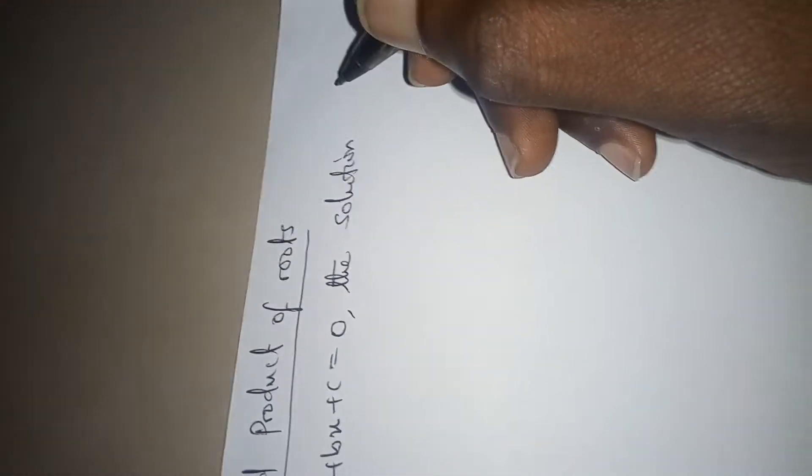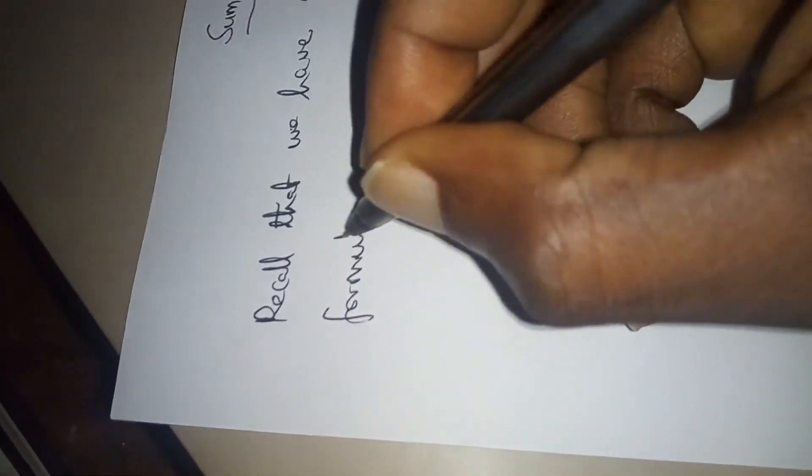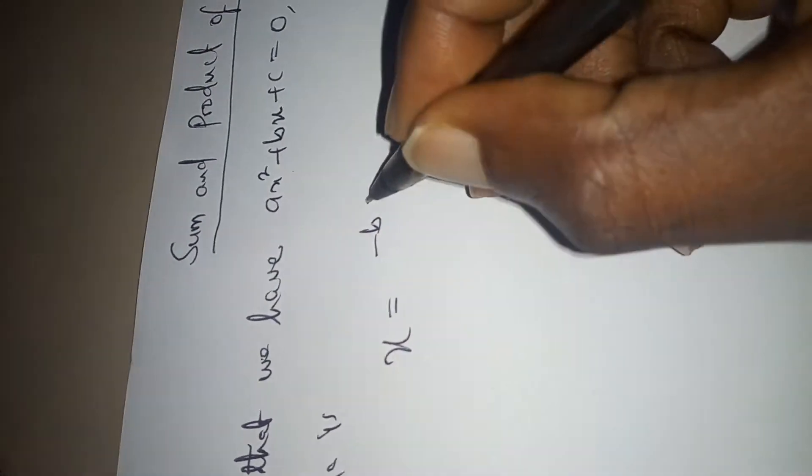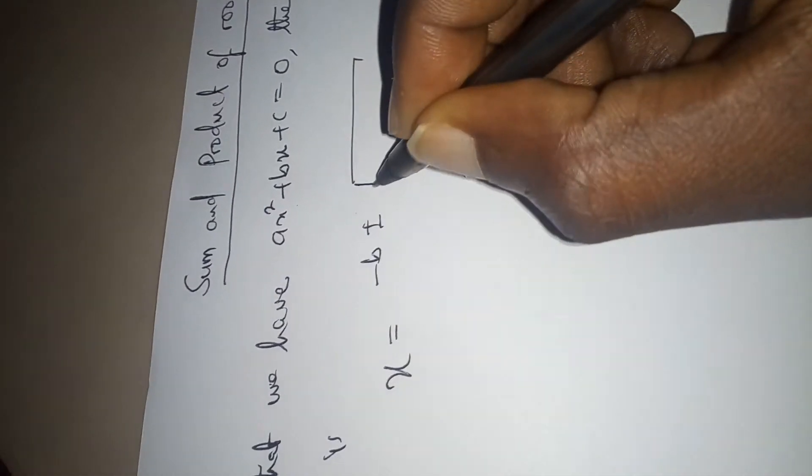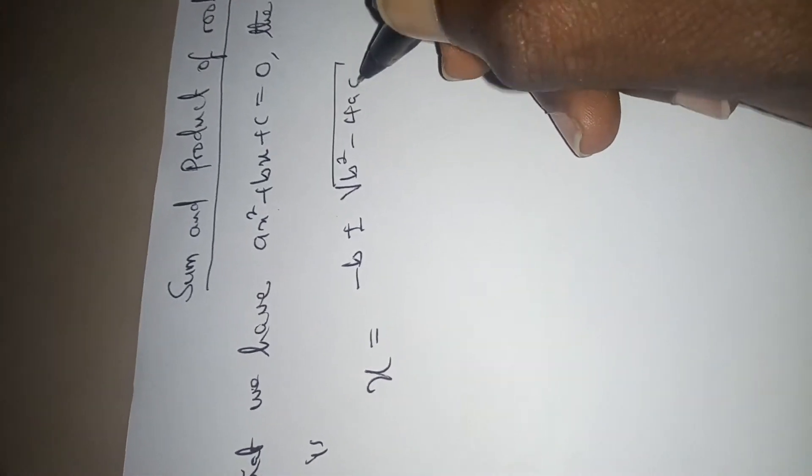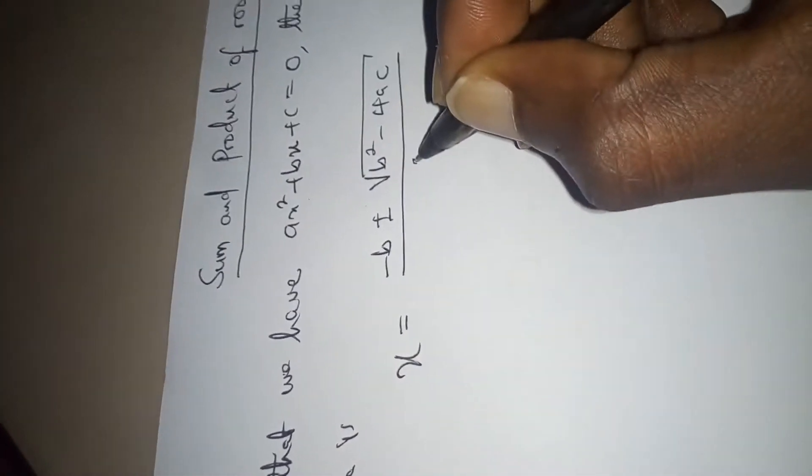The solutions by quadratic formula is X equals minus B plus or minus square root of B squared minus 4AC over 2A.